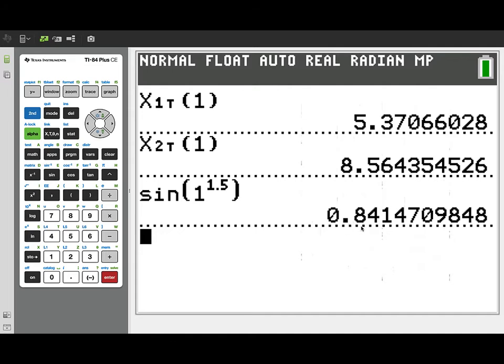And this is our velocity for particle P. So it's at 5.370 and the positive velocity tells us it's moving to the right.